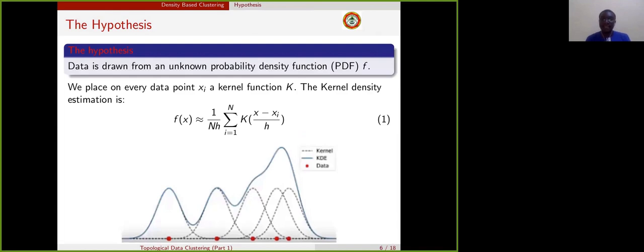What we do is that we estimate this function by using, for example, kernel density estimation. In kernel density estimation, we place on every data point the kernel function K. That will then help us to define the value of the function f of x like given here in equation one.